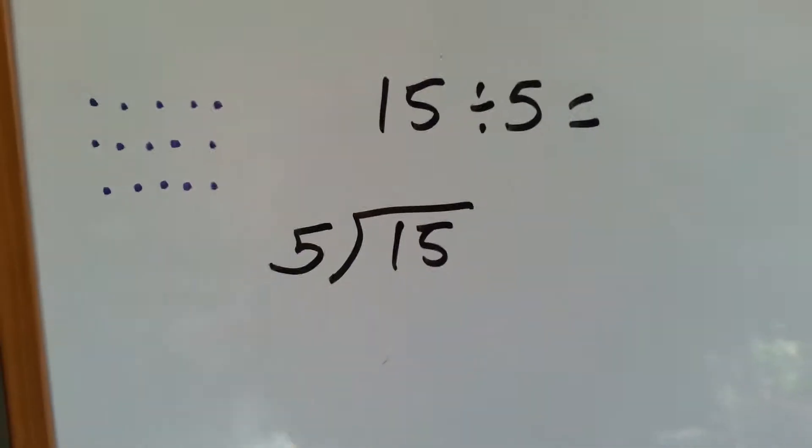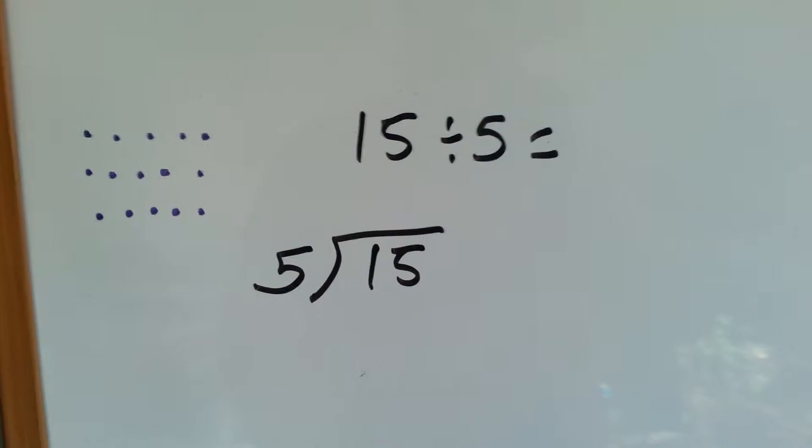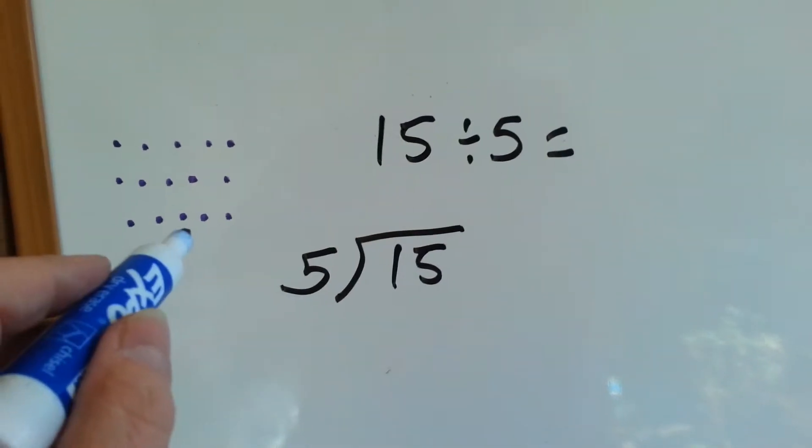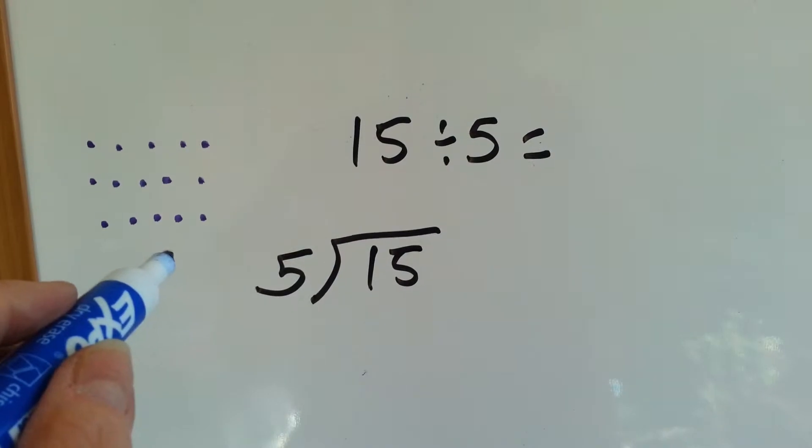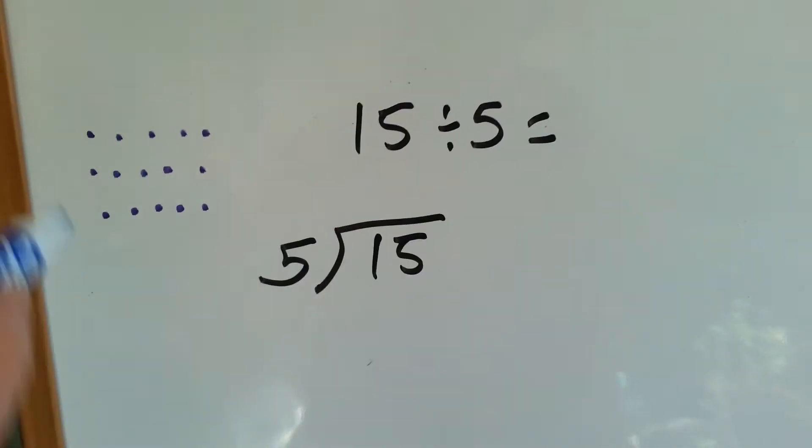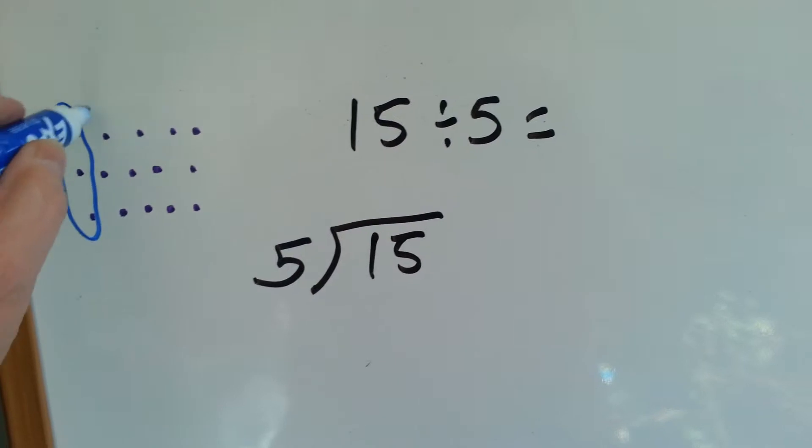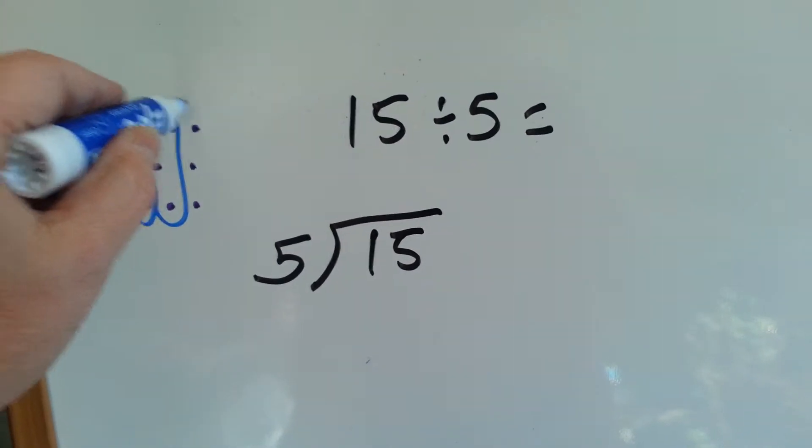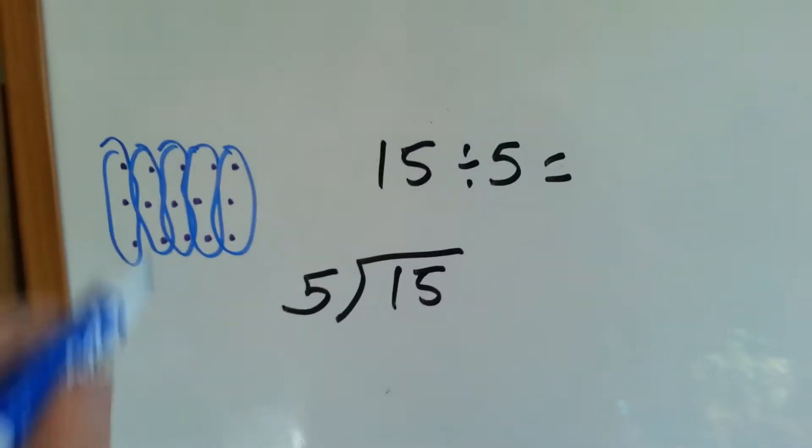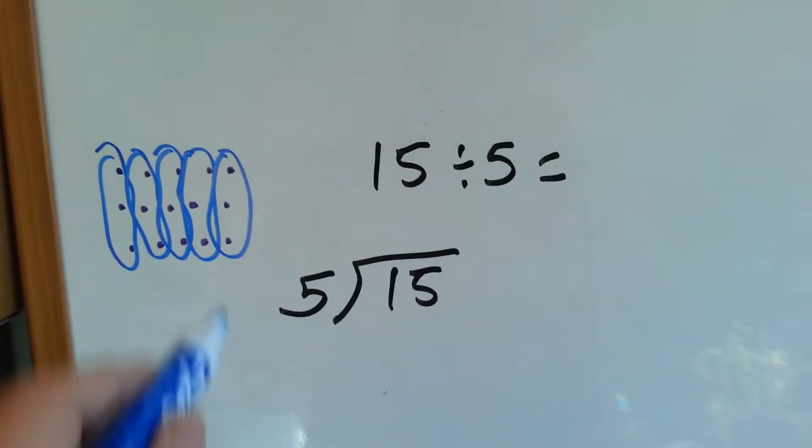Let's take a look at this one. 15 divided by 5. We have 15 dots, and we want to divide them into 5 equal groups. 5 goes into 15 how many times? 1, 2, 3, 4, 5. How many dots are in each group? 1, 2, 3.